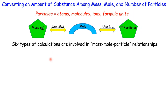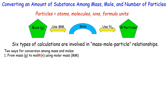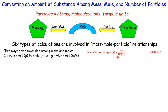The first two involve conversions between mass and moles. Method one is from mass to mole: you start with grams, use molar mass as the conversion factor with grams on the bottom and moles on top. Method two is the opposite — from mole to mass. Pause here and write the equation for method two.